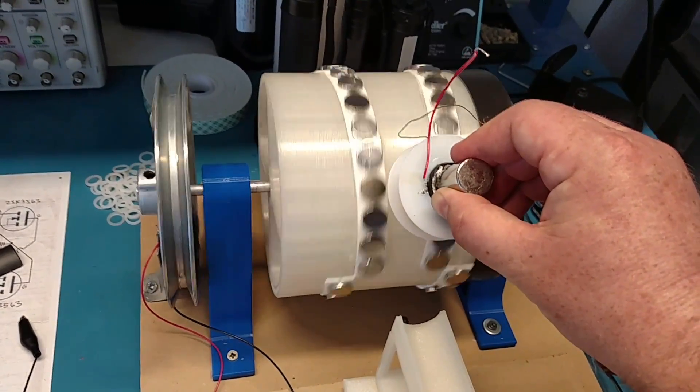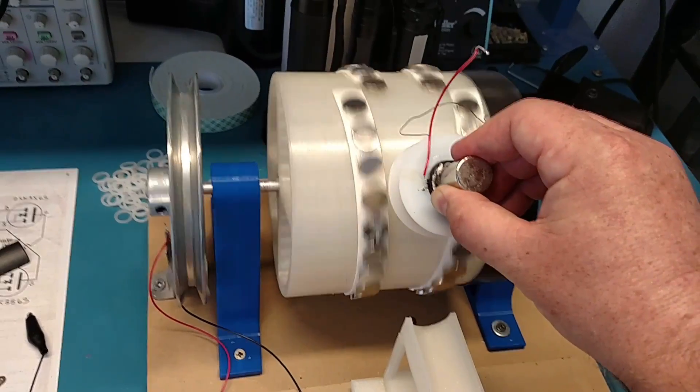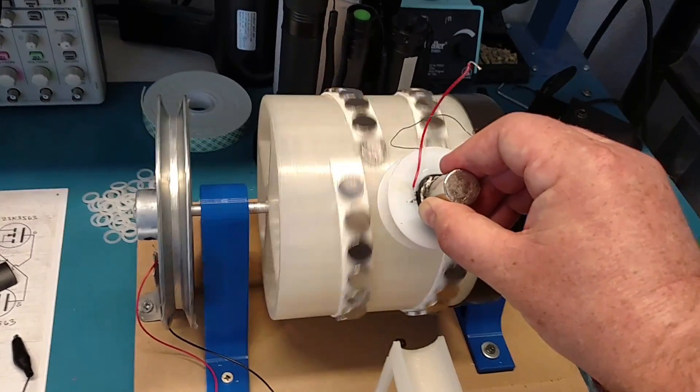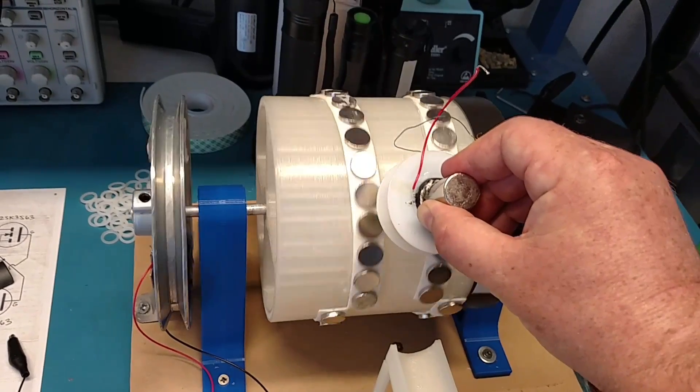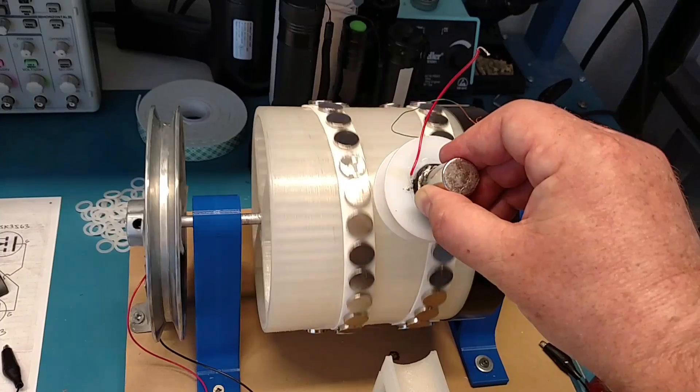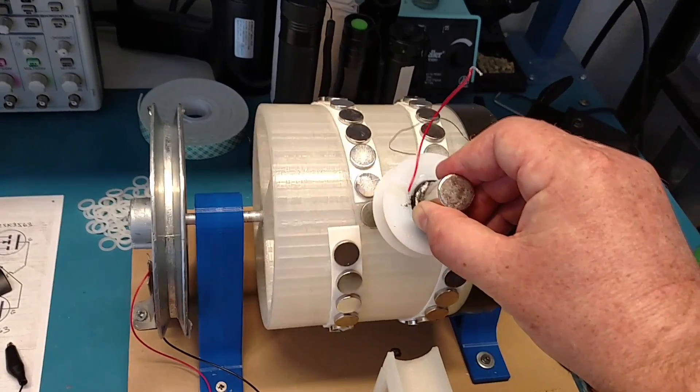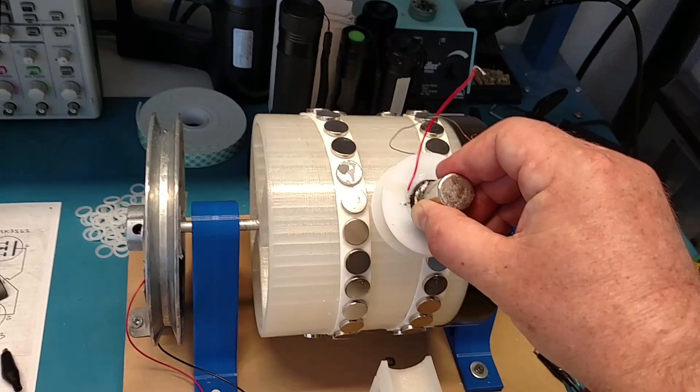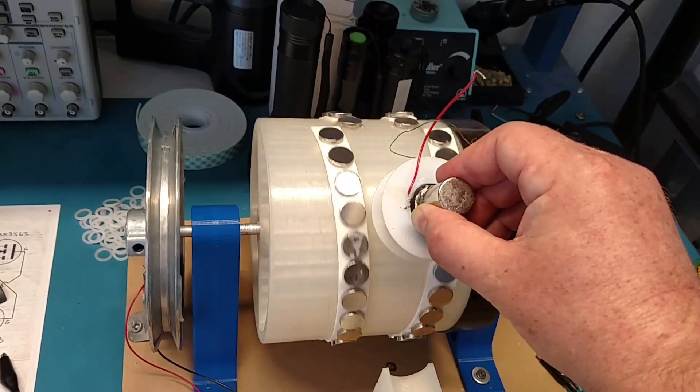So as you can see, as I hold the magnet close to the V-gate, it slows down and it hits that gate right there. And it bounces off the gate because that gate has the greatest amount of resistance.